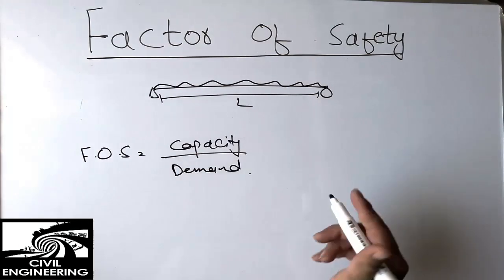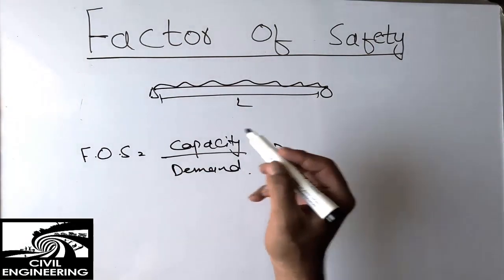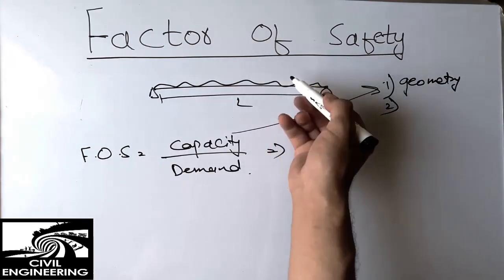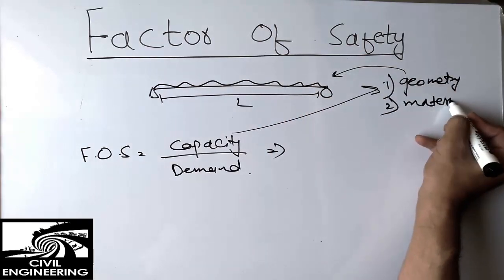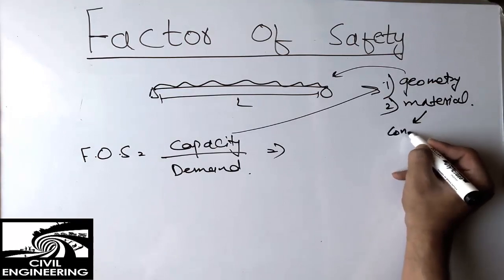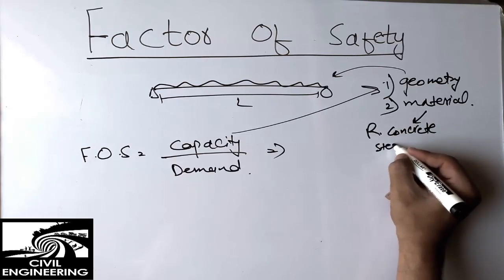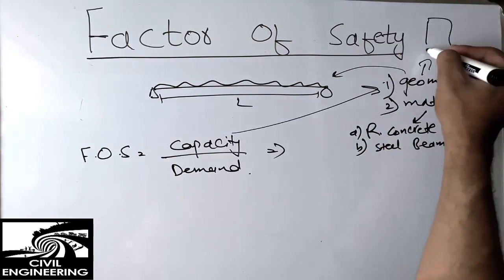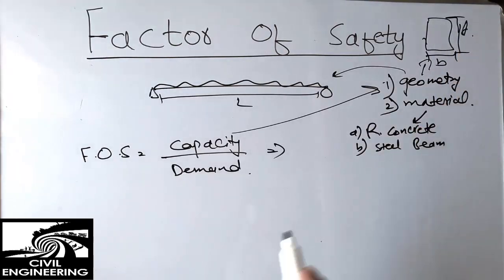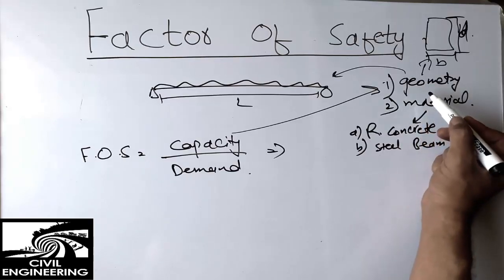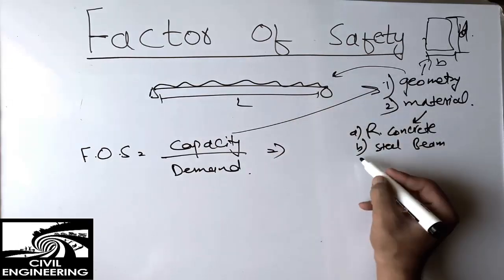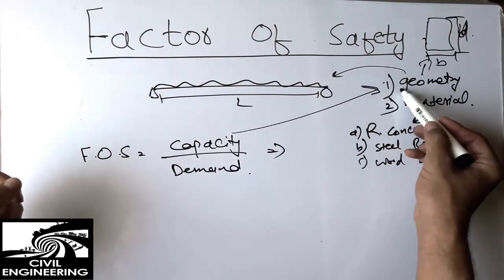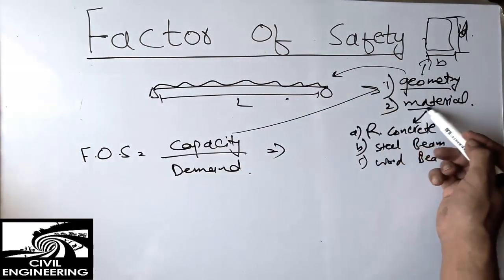The capacity of the beam depends totally on two factors. Number one is the geometry of the beam — for example, the width B and the depth D of the beam. Number two is the material of which the beam is composed — it may be a reinforced concrete beam, a steel beam, a wood beam, or an aluminum beam. So capacity depends entirely on the beam's dimensions and material properties.